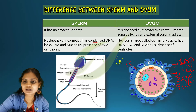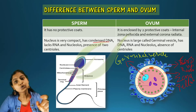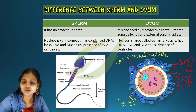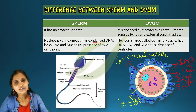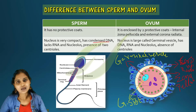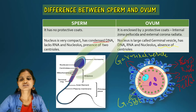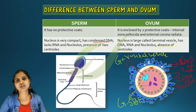The germinal vesicle in the ovum contains a large nucleolus and consists of RNA. It is very important to note that centrioles are absent in the ovum, whereas two centrioles are present in the sperm.